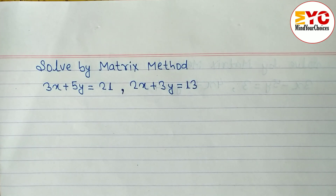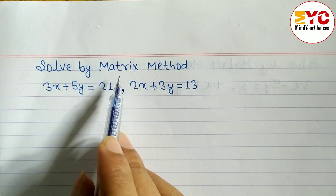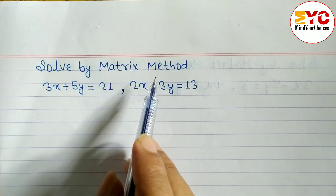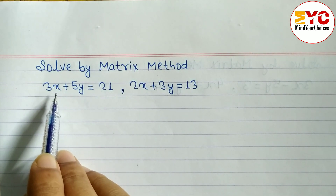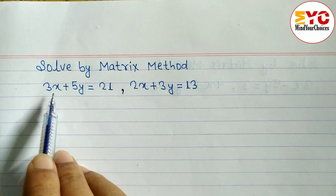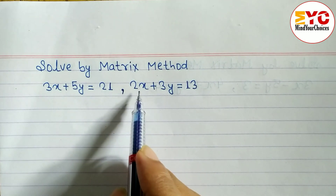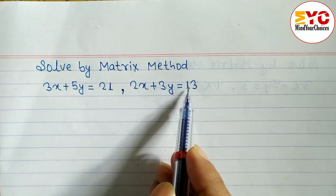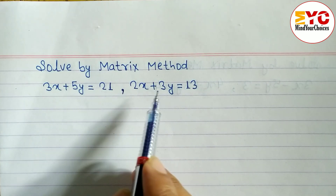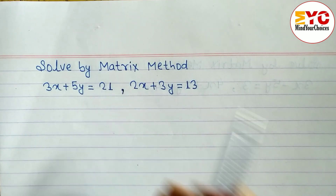In this video we are going to learn how to solve equations by matrix method. Two equations are given: 3x plus 5y is equal to 21, and 2x plus 3y is equal to 13. We have to find out the value of x and y using the matrix method.